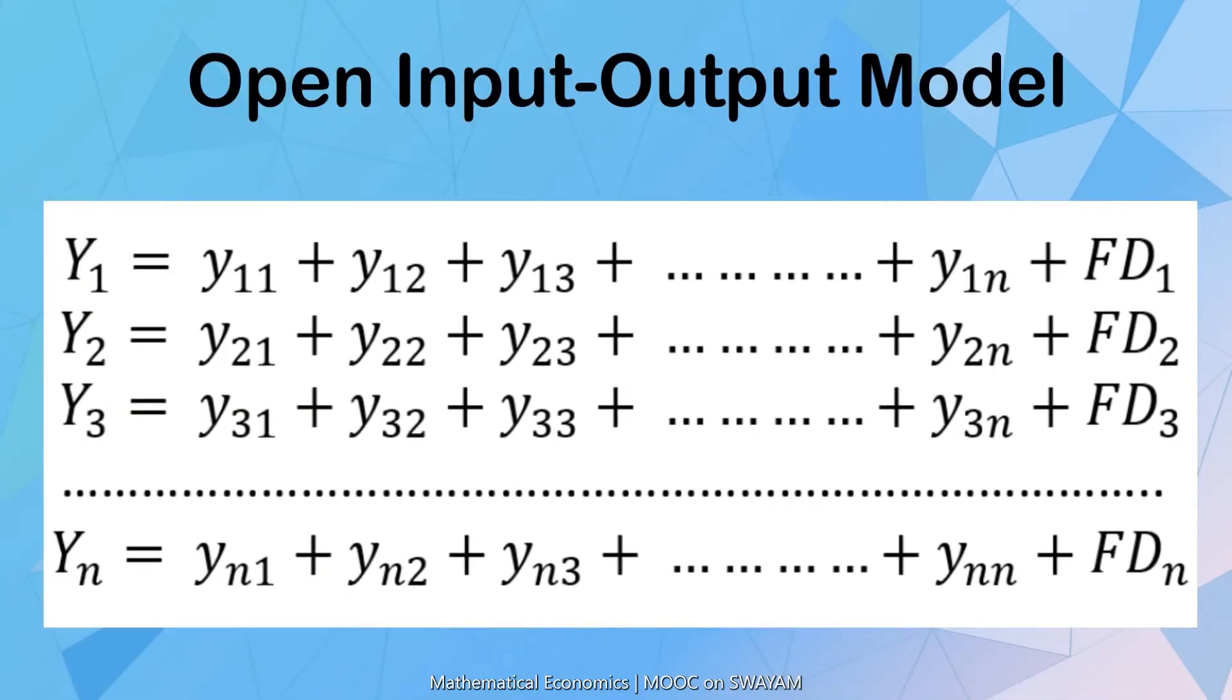The general mathematical formulation of the open-input-output model looks like this. Y1, Y2, up to Yn are the total output of the n-sectors.